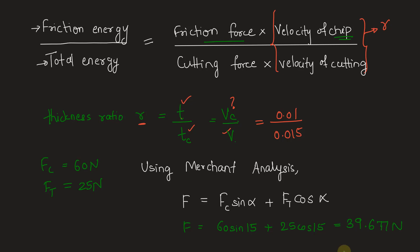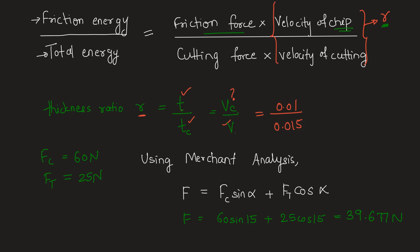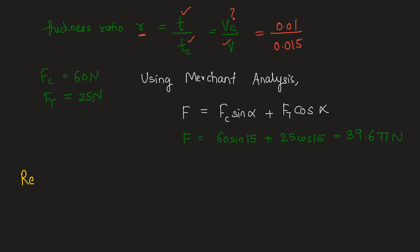Putting this value and the ratio R, the required ratio will be 39.677 upon 60 times the ratio R which is 0.01 upon 0.015.